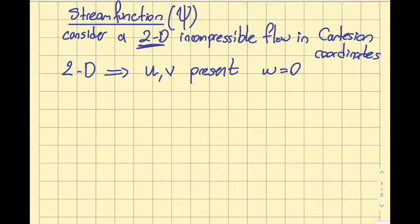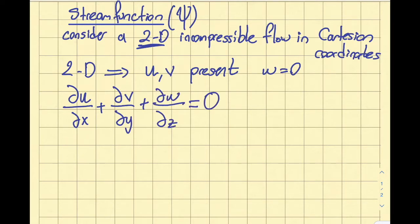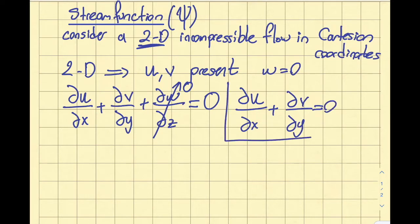So in this 2D case, let's look at what happens to my conservation of mass or continuity equation. What happens is ∂u/∂x + ∂v/∂y + ∂w/∂z = 0 because it's incompressible. Now, as I identify w to be 0, this last term vanishes. So I get ∂u/∂x + ∂v/∂y = 0. This is as far as I can proceed.